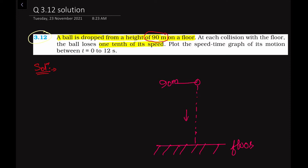What will happen is the ball will strike the ground, bounce back, go up to some distance, and then fall again and bounce back. We are given to plot the speed-time graph of its motion between 0 to 12 seconds. Along the y-axis we have speed and along the x-axis we have time. We have to calculate the distance after each collision, then calculate the speed and the time.